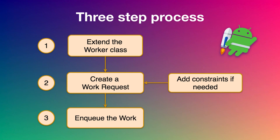Using WorkManager is very easy. I've broken it down into three steps. The first step is to extend the Worker class, where you write all the logic of your task. Secondly, we need to create a WorkRequest, and if you want, you can add a few constraints — we'll talk about them later. And thirdly, you just get an instance of WorkManager and enqueue your work. And that's all there is to WorkManager — you don't have to do anything else to use it.